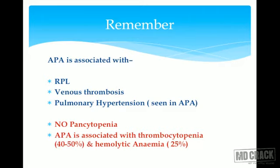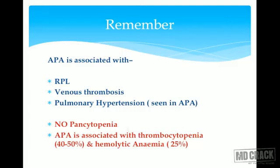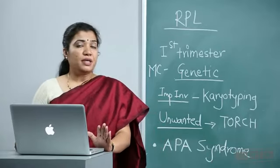Antiphospholipid antibodies are associated with recurrent pregnancy losses and more commonly with venous thrombosis. Thrombi can affect all organs: CNS (ischemia), heart (myocardial infarction), kidney (infarction), and lungs (pulmonary hypertension — very commonly seen). There is no pancytopenia — only platelet count decreases due to platelet aggregation in thrombosis. Hemolytic anemia may occur in 25% of patients, but neutrophil count always remains normal in APS. This is a frequently asked point.